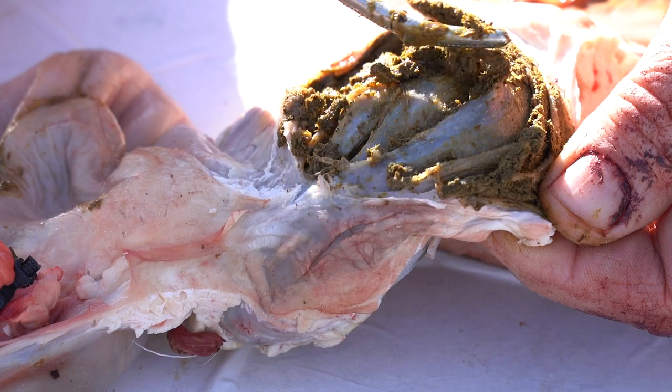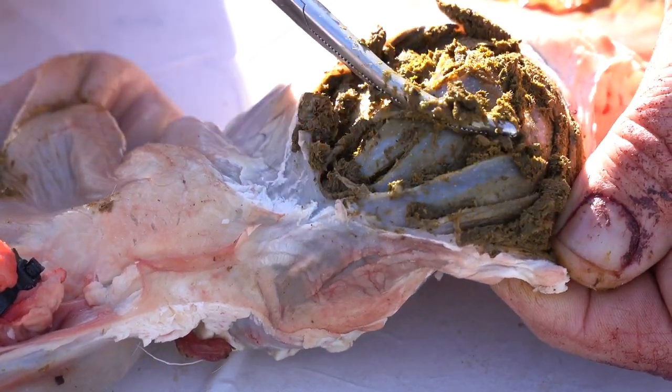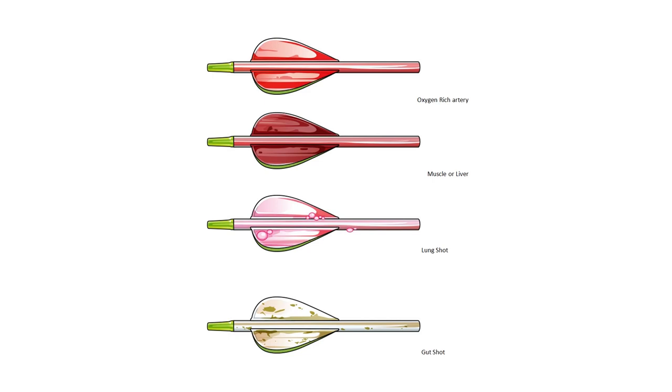The third chamber, the omasum, will be dry like dry sawdust and bright green because it sucks all moisture out of everything — that tells you you're a little farther back. The fourth chamber is where true enzymes start digestion and everything gets liquidy — still green but less sweet smelling. Then into the guts, and the farther back you go, eventually you're into fecal matter. You can see and smell all of that on the arrow as well.